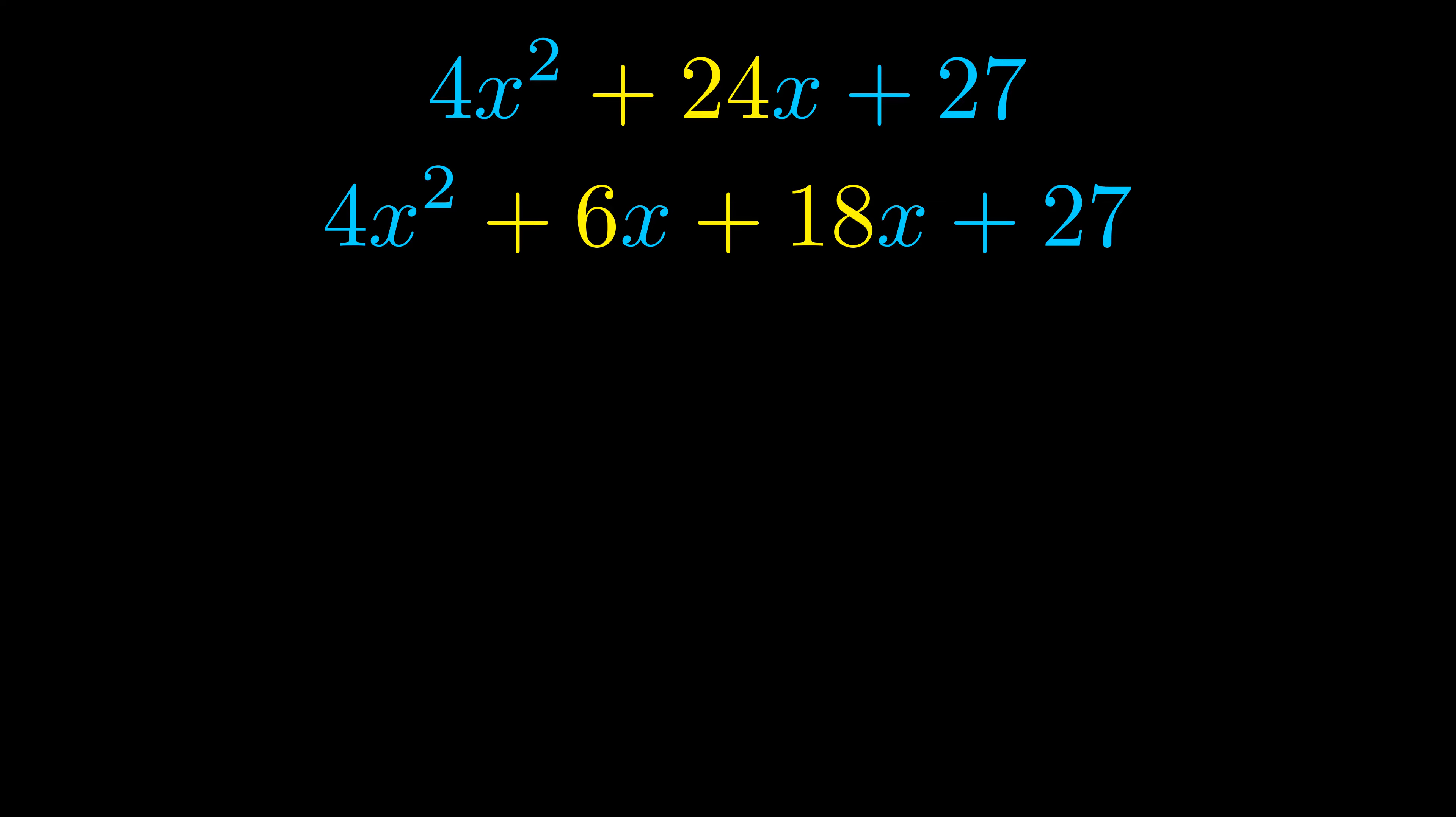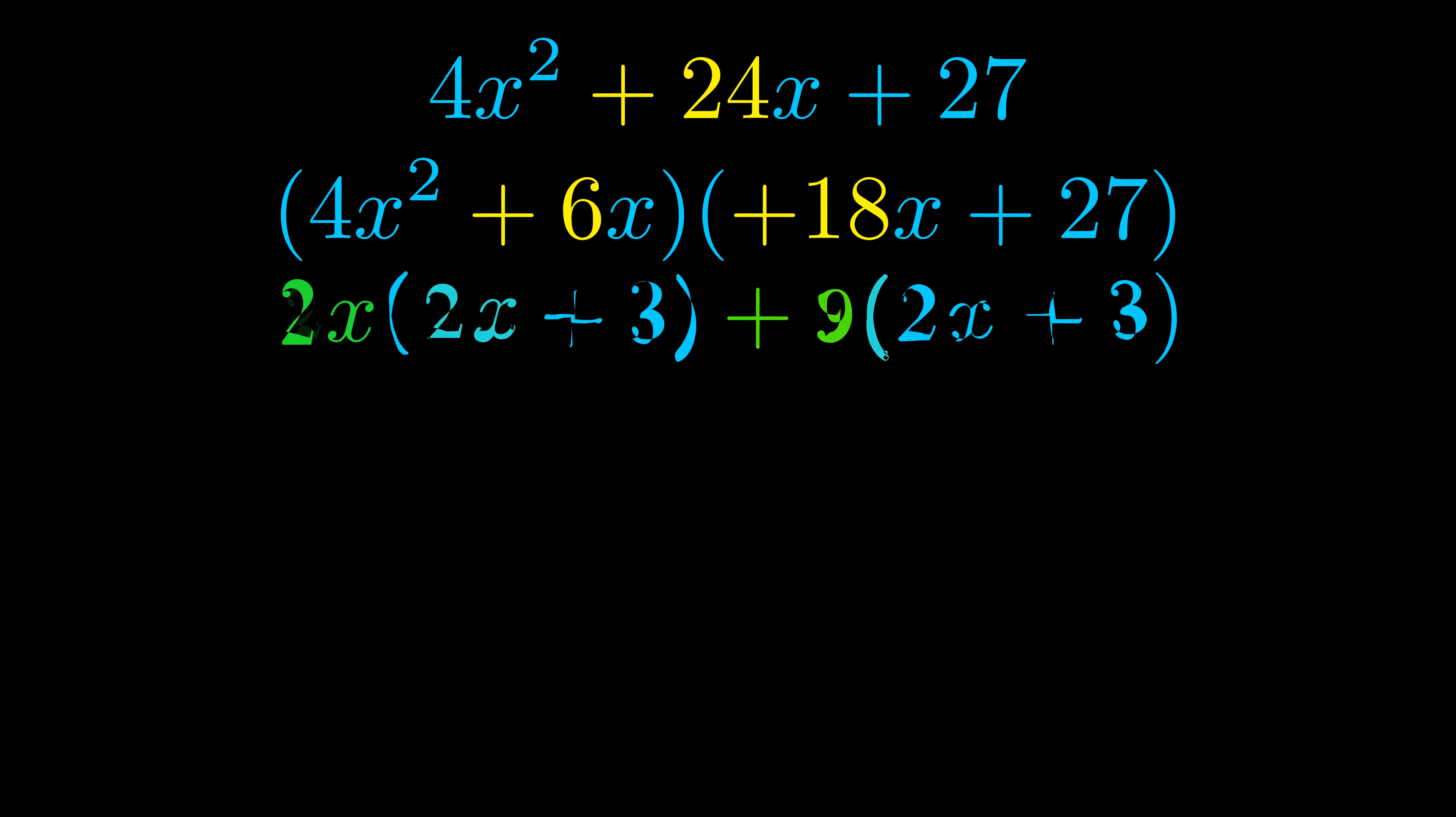Once we've done this, we go ahead and we put parentheses around the first term and the last term, and we do that so that we can take the greatest common factor out of both terms. We can see the greatest common factor is now outside in green.